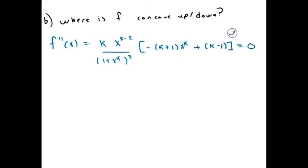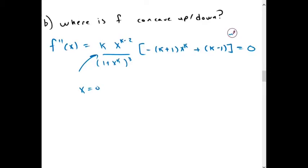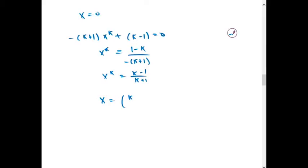And if we set that equal to zero, we get x equals zero from here. And we get this factor equal to zero. And we solve for x to the k. We get k minus 1 over negative. Sorry, it should be 1 minus k over negative k plus 1, which is k minus 1 over k plus 1. And solving for x, we get x equals k minus 1 over k plus 1 to the 1 over k.